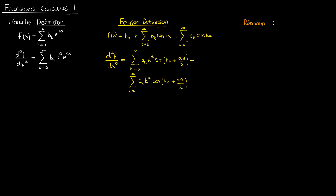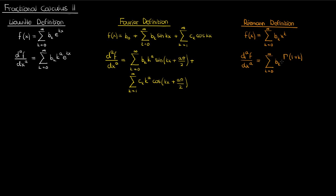The third definition we talked about last time is the Riemann definition. If I have a function f of x as the sum of a bunch of polynomial terms in x, then differentiating f to the fractional order a will give me a specific expression. Let's now apply each of these definitions to find the fractional derivative of order a of a function f of x that is a constant.